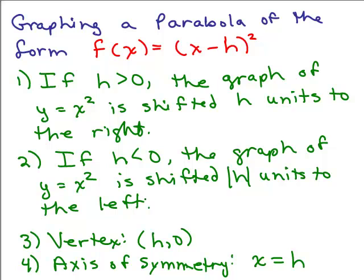If h is negative, like x minus a negative 2 which you would read as x plus 2, then the graph of y equals x squared is shifted 2 units to the left. When you see a plus, a positive number, you're going to go to the left that many units. The vertex is h, 0, and axis of symmetry is x equals h. Any time you have the vertex, whatever the x coordinate is, that will be what goes for the axis of symmetry, x equals the same number as the x coordinate of the vertex.